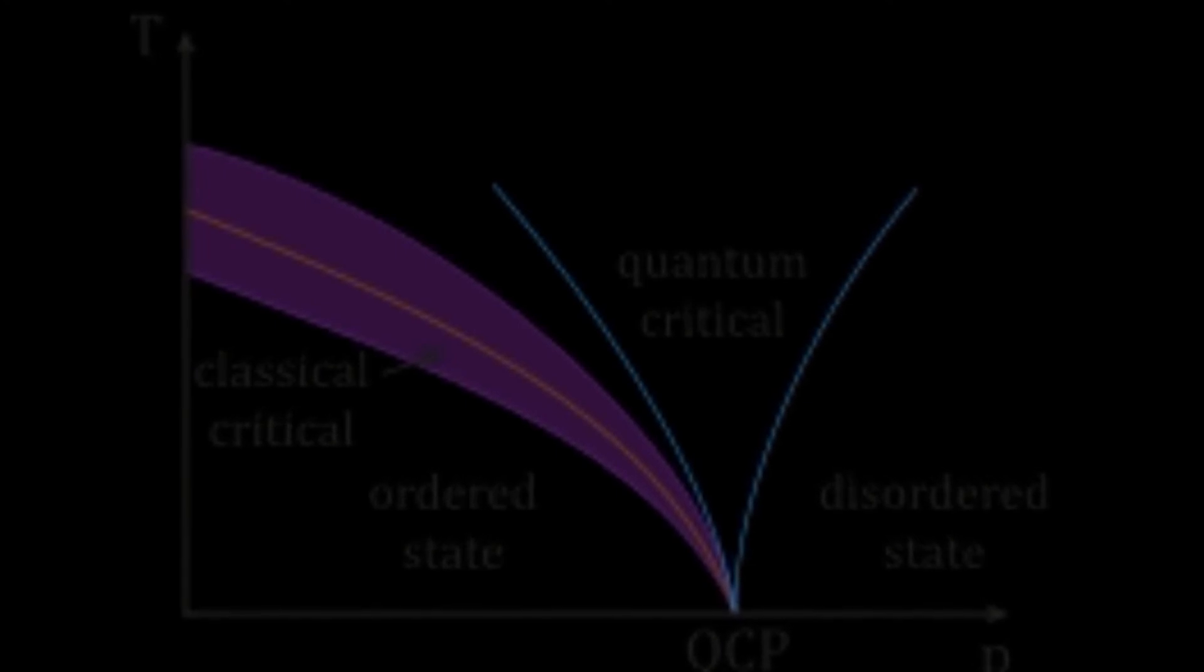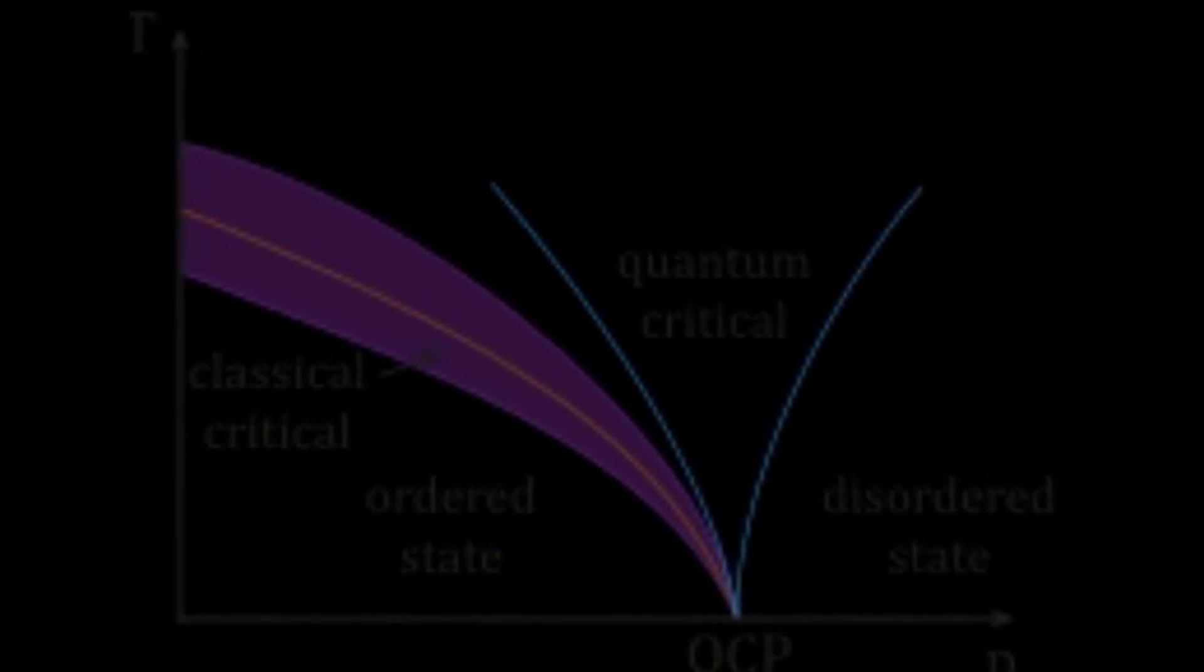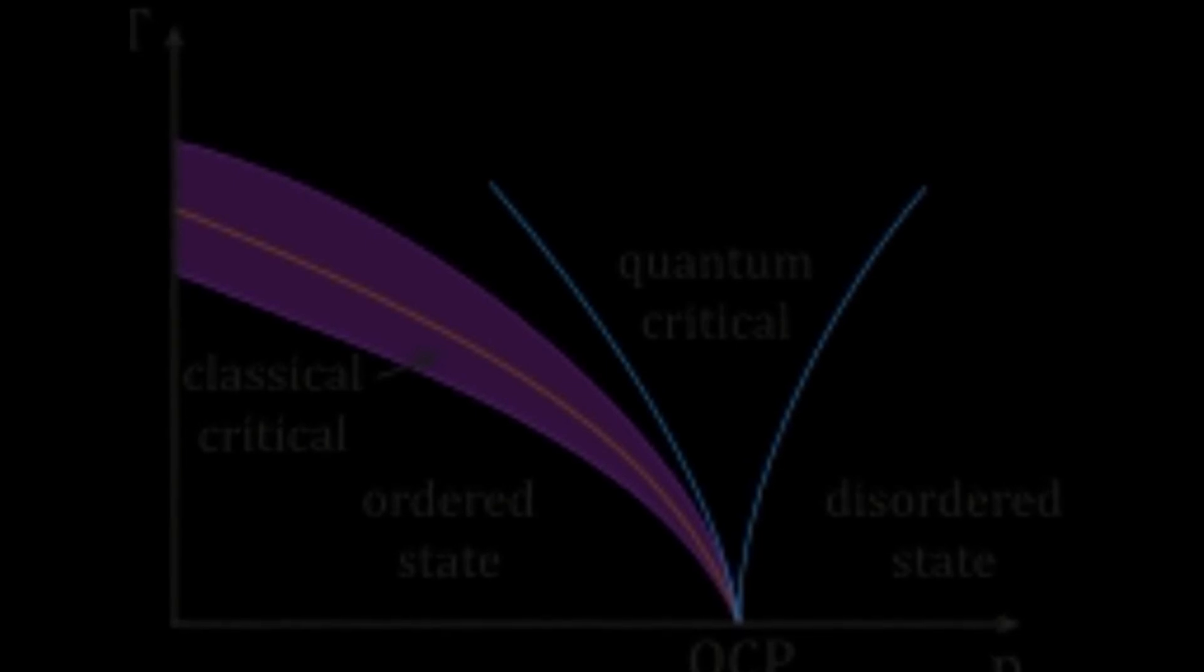Scientists have had some success focusing X-rays with microscopic franel zone plates made from gold, and by critical angle reflection inside long tapered capillaries.